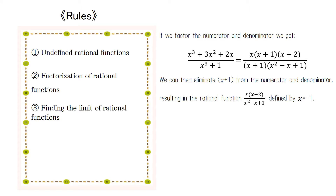If we factor the numerator and denominator, we get x(x + 1)(x + 2) over (x + 1)(x² − x + 1). We can then eliminate (x + 1) from the numerator and denominator to get the rational function x(x + 2) / (x² − x + 1), which is defined at x equals negative 1.